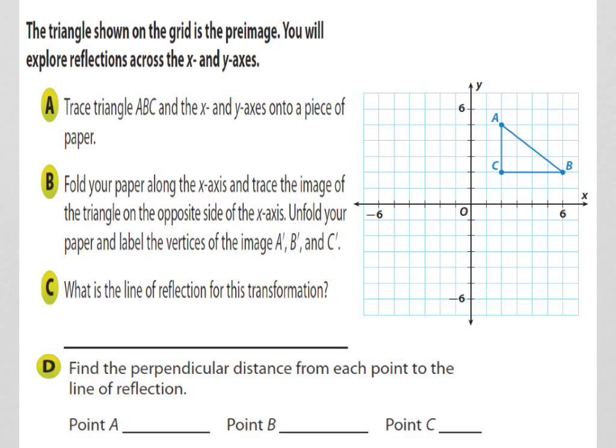The book tells us we have this triangle shown on the grid, triangle A, B, C. And again, this is called our pre-image. They want us to do two things. First, we're going to reflect it across the X-axis and then we'll reflect it across the Y-axis.